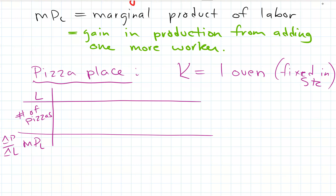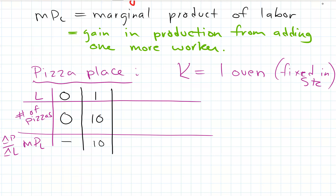If we have zero workers, we get zero pizzas — the pizzas can't make themselves. We don't have robots in our kitchen. If we have one worker, they can only make 10 pizzas an hour. The numbers are purely made up. The reason they don't make that many is because they have to do everything — serving customers, taking money, then sprinting to the back to make pizzas and put them in the oven. They're doing all the different parts, so they're not going to be super productive.